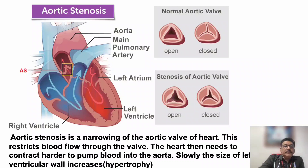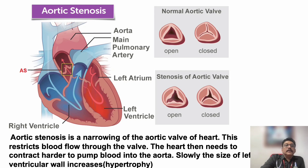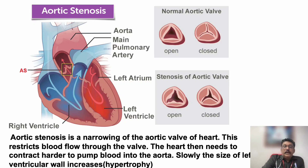But when the valve is tight and difficult to open, during systole blood cannot pass through the aortic valve to the aorta normally. So the pressure over the left ventricle increases. This narrowed aortic valve produces pressure overload over the left ventricle, which causes left ventricular hypertrophy and later dilatation.